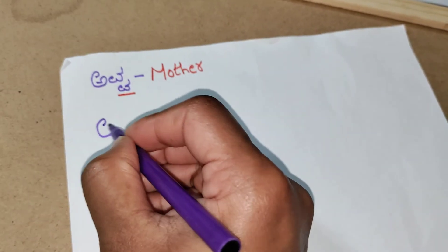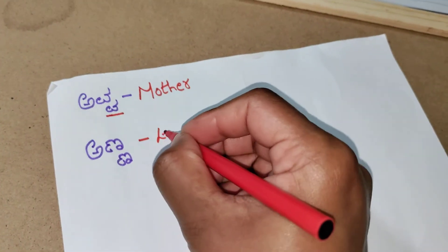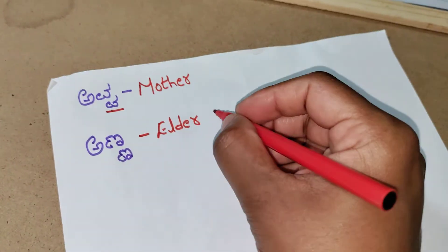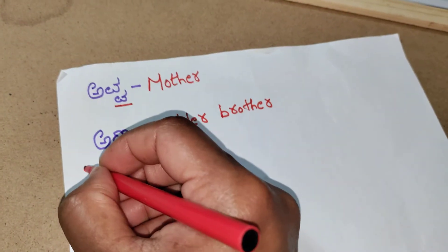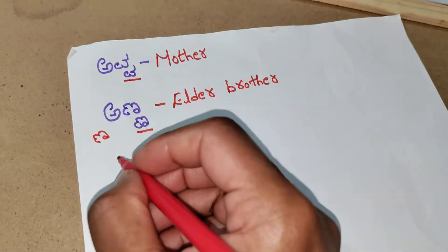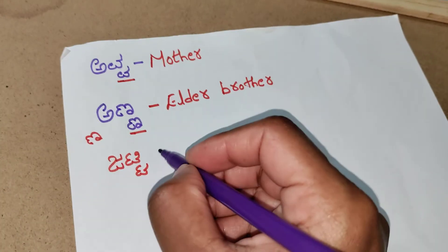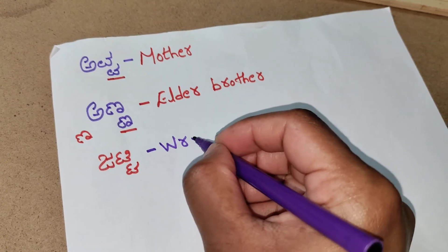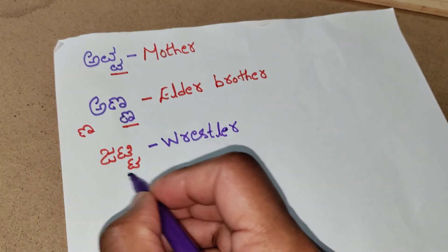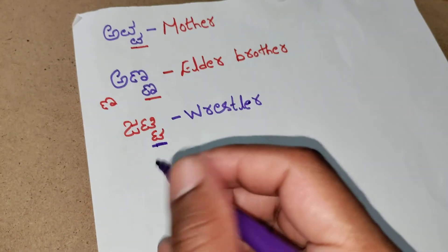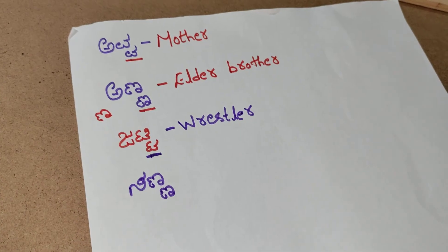The next word is anna — the meaning of anna is elder brother. Here the vatakshara is nage navatu. The next word is jati — the meaning of jati is razzler. Here the vatakshara is thavatu. The next word is sanna — the meaning of sanna is small.